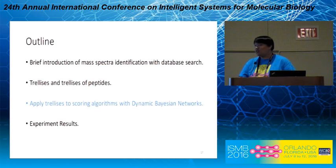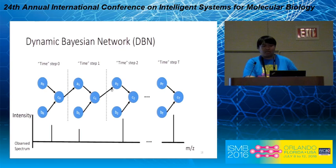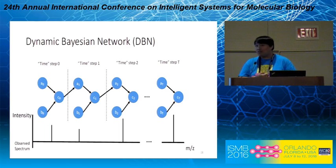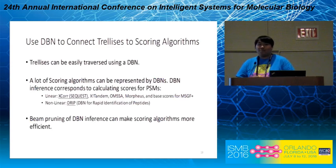Next, I'm going to show how to apply such an efficient structure to various scoring algorithms using dynamic Bayesian networks. Dynamic Bayesian networks can be thought of as a more generalized form of Markov chains, where we define the interactions among variables by a graphical structure that gets replicated across time steps with time-dependent interactions. For our problem of mass spectra identification, there is no real time concept — instead, the time step corresponds to the order of observed peaks based on their m/z values. We chose to use DBNs to connect trellises to scoring algorithms for three reasons.